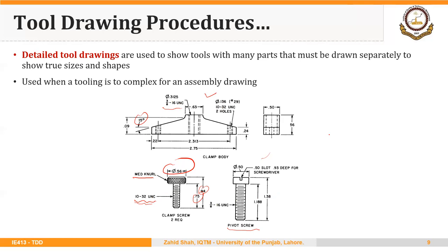Another thing to notice is that words can be used on drawings to better describe a certain feature. For example, this slot should be 0.50 inches wide and 0.93 inches deep for a screwdriver. So the purpose of the slot and its dimensions are described in words.